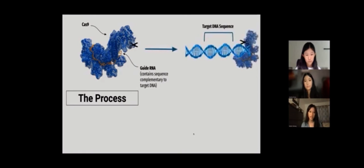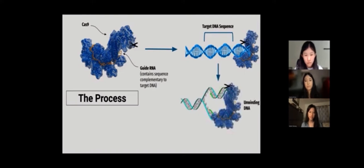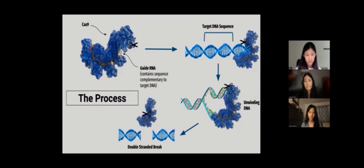The process begins with the Cas9 RNA complex searching through segments of DNA for its target site. Cas9 unwinds a section of DNA and verifies if the guide RNA sequence matches. If the sequence is paired completely, Cas9 cuts the DNA, forming a double-stranded break. After this, three main categories of genetic edits can be performed.